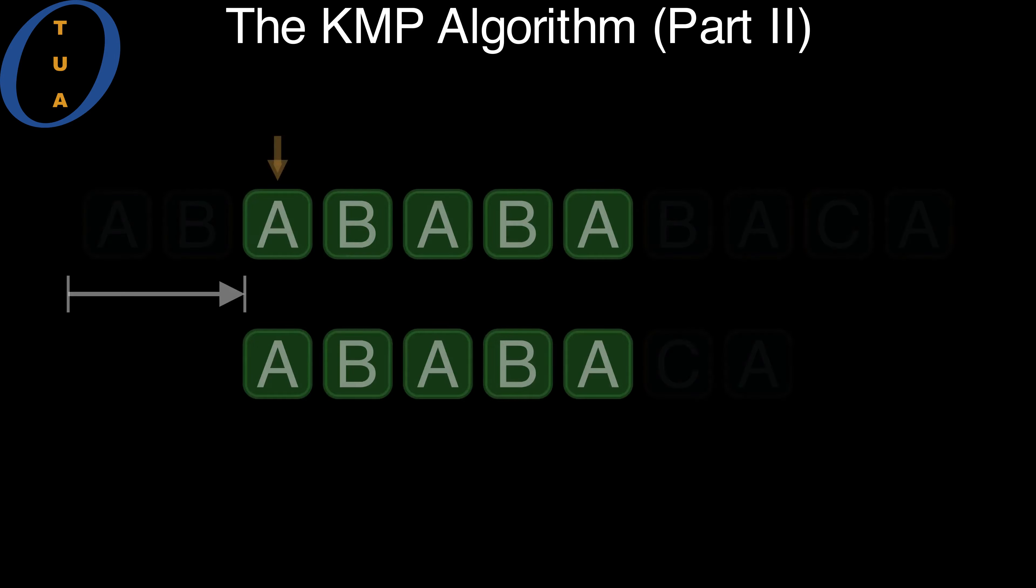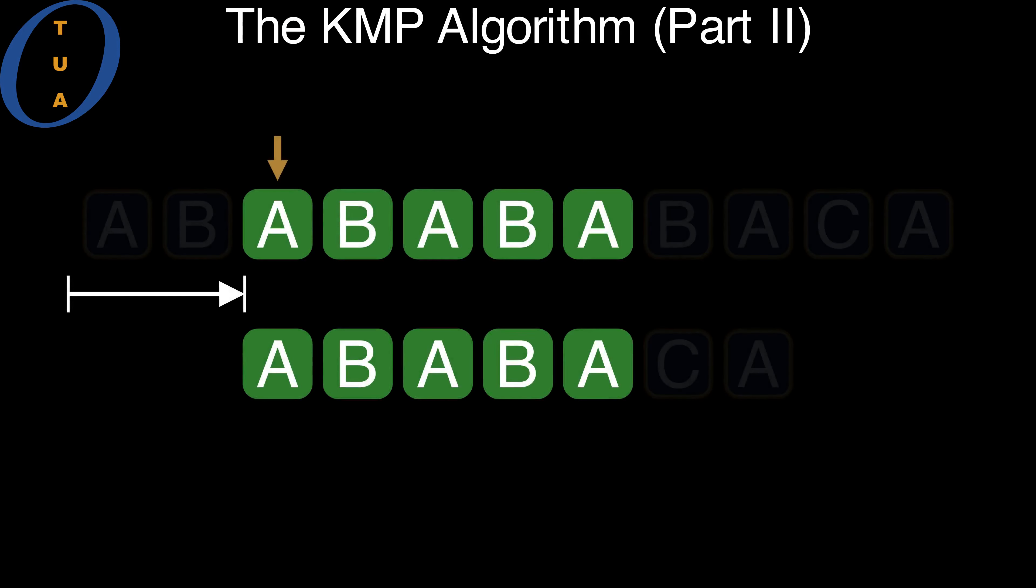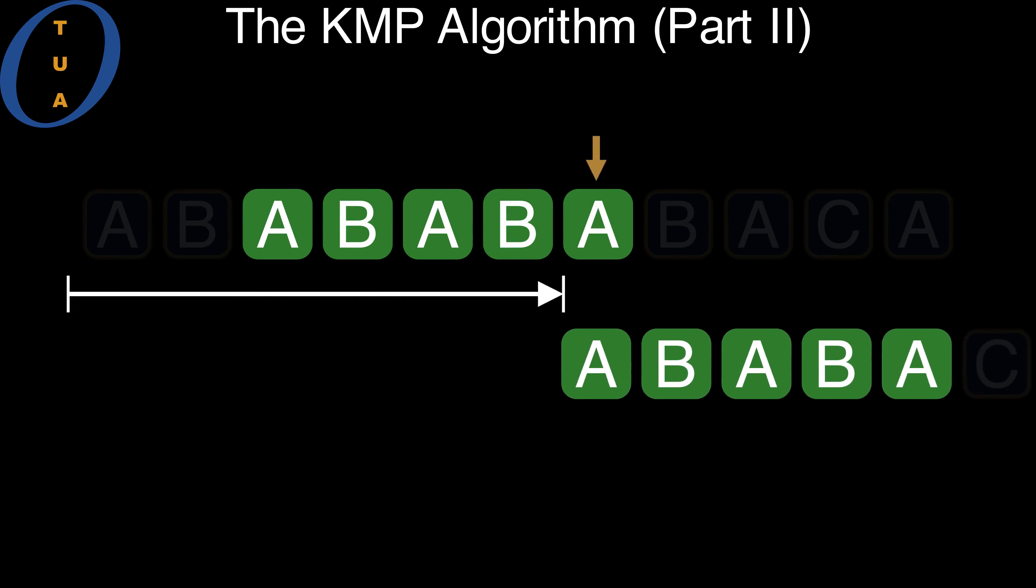To obtain a potential match, we could align the pattern using any of the borders. Align at the empty border.